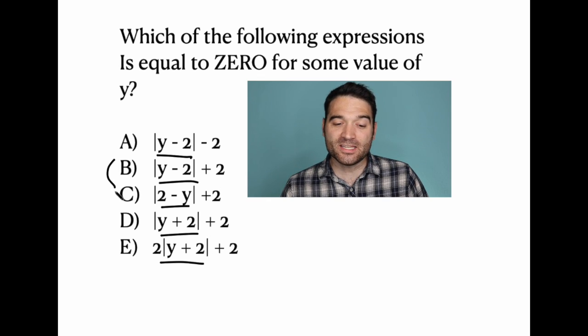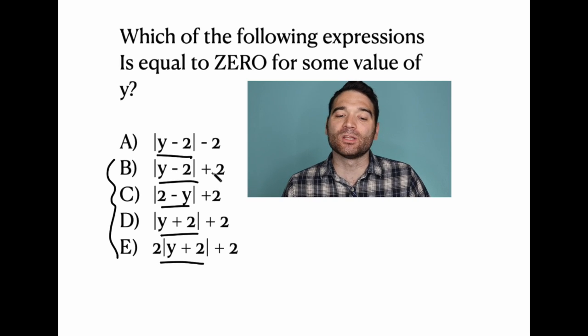And then for b, c, d, and e, if we're going to add two, well, then we're at two, and it's impossible to get below two.